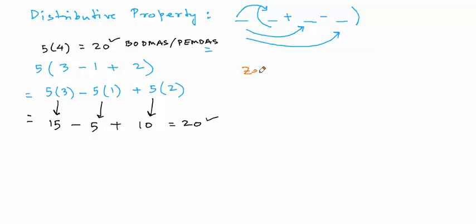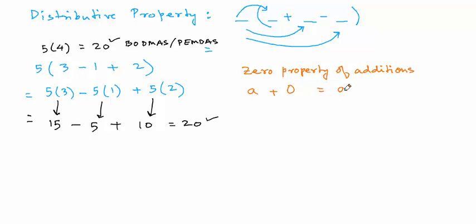There's something called the zero property of addition. It tells us that if we have a number and we add zero to it, the answer is the number itself. You might think this is common sense — and yes, it is — but we use this common sense when solving equations, so you need to know about the property you are using.